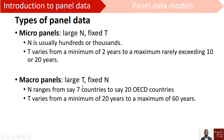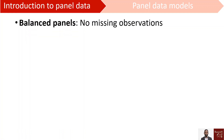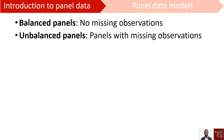We also have macro panels. Here we study at the country level, for example, and we study a small number of countries over a large period of time. Then we have balanced and unbalanced panels — any panel, whether micro or macro, can be balanced or unbalanced. For a balanced panel, we have no missing observations; for an unbalanced panel, we have some gaps.